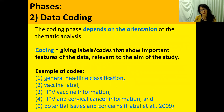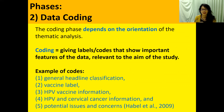Step two: data coding. The coding phase depends on the orientation of the thematic analysis — I will come to that — but we first need to understand what coding is. Coding is giving labels to the topics and subtopics we see in the text; giving labels or giving codes.